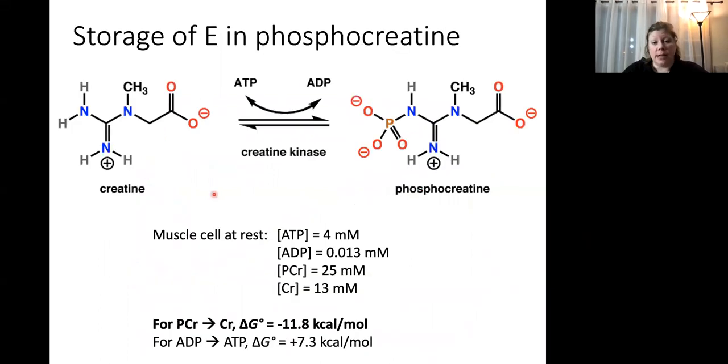We'll spend a lot of time talking about aerobic metabolism in the next couple of weeks, but I really want to focus on this creatine phosphate. And what that is all about. So energy in our cells can be stored in phosphocreatine. So on the right-hand side here, we've got phosphocreatine, and just creatine on the left. You can see phosphocreatine has a phosphate group added onto it. And phosphocreatine can be converted into creatine. And when that occurs, this phosphate group is donated to ADP producing ATP. So in a muscle cell that's at rest, we have about four millimolar ATP and not very much ADP. We have a lot though, of phosphocreatine and even quite a bit of regular creatine.